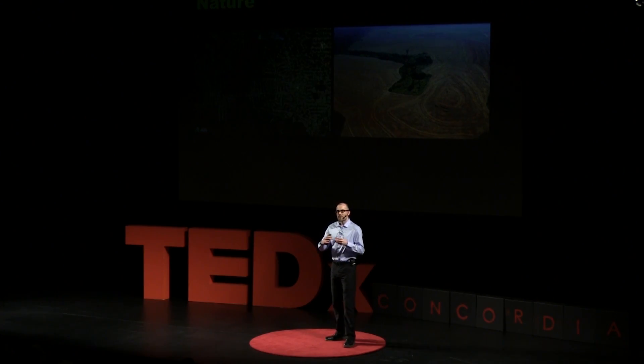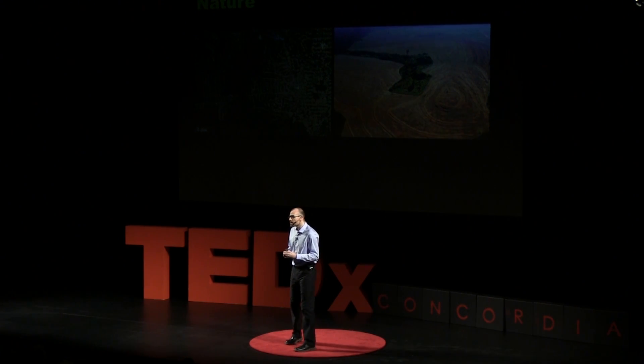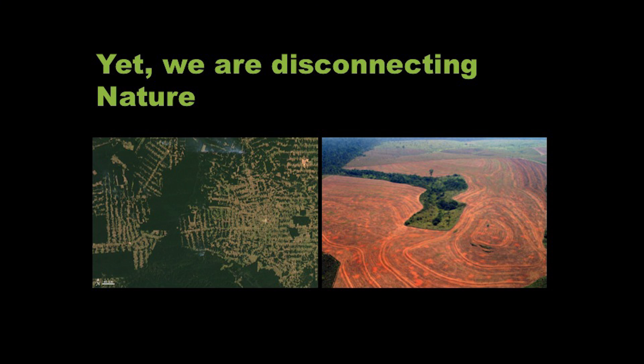But whilst we connect our societies at ever increasing pace, we are disconnecting nature. This is the flip side of what we're doing as we connect our society. We convert the land cover — converting the surface of the land to make space for the food we need to eat, to develop the cities and the transport networks that define our connectivity. Forests are typically the first things that get removed to make space for our lives.